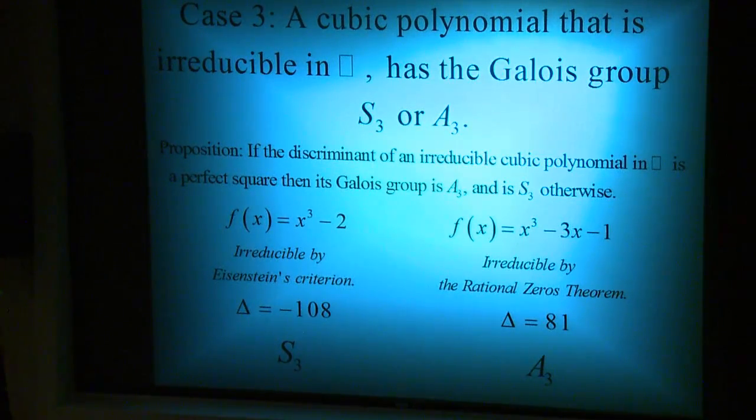The third argument states that if a cubic polynomial is irreducible in the rationals, it has the Galois group S3 or A3. To determine a cubic's Galois group, its discriminant must be examined.